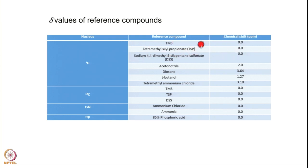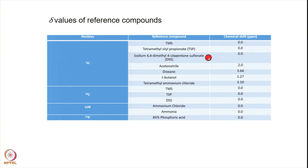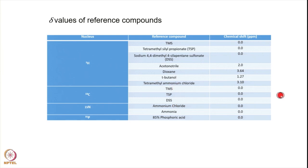Tetramethylsilylpropionate (TSP) is used for aqueous systems — it also gives one line at 0.0 ppm with deuterated groups. Another common reference is DSS (sodium 4,4-dimethyl-4-silopentane sulfonate), which has many lines but the most upfield line is taken as 0.0. Other compounds used include acetonitrile, dioxane, and tertiary butanol. For carbon-13, TMS, TSP, or DSS are all used at 0 frequency.